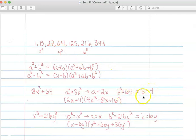So now that I have my A and my B, I can just plug them into this formula. And I'm going to get 2x plus 4 times A squared, in this case, is going to be 2x squared. So that's going to be 4x squared minus 2x times 4 is 8x plus B squared is 16.